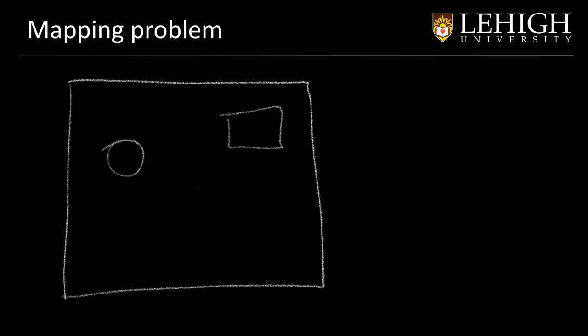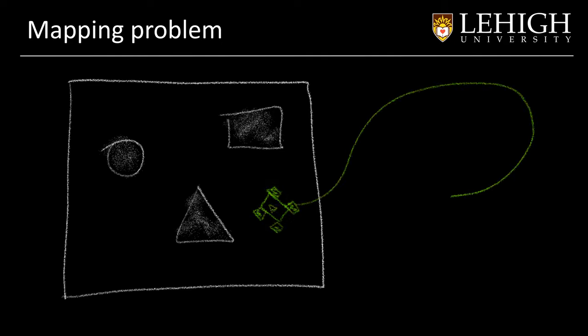Let's talk about the mapping problem. In this scenario what we have is a map with some obstacles and we have a robot in this environment. If we check what the robot knows about the environment, we know that actually the robot knows nothing about the environment. It needs to know where the obstacles are in order to navigate in the environment.